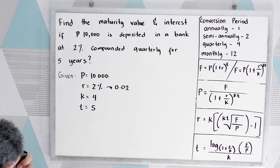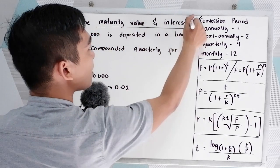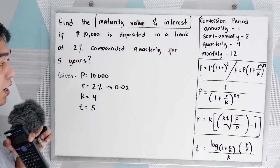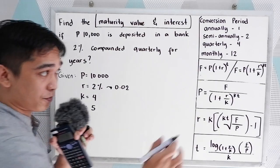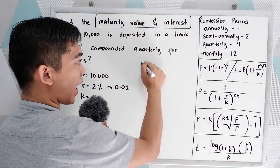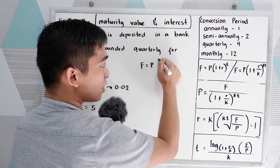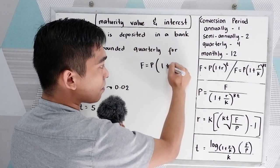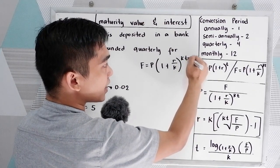Now we're going to get the maturity value and the interest. Let us find first the maturity value, or the F. So F is equal to, copy the formula: P, quantity, 1 plus R over K, then raised to KT.